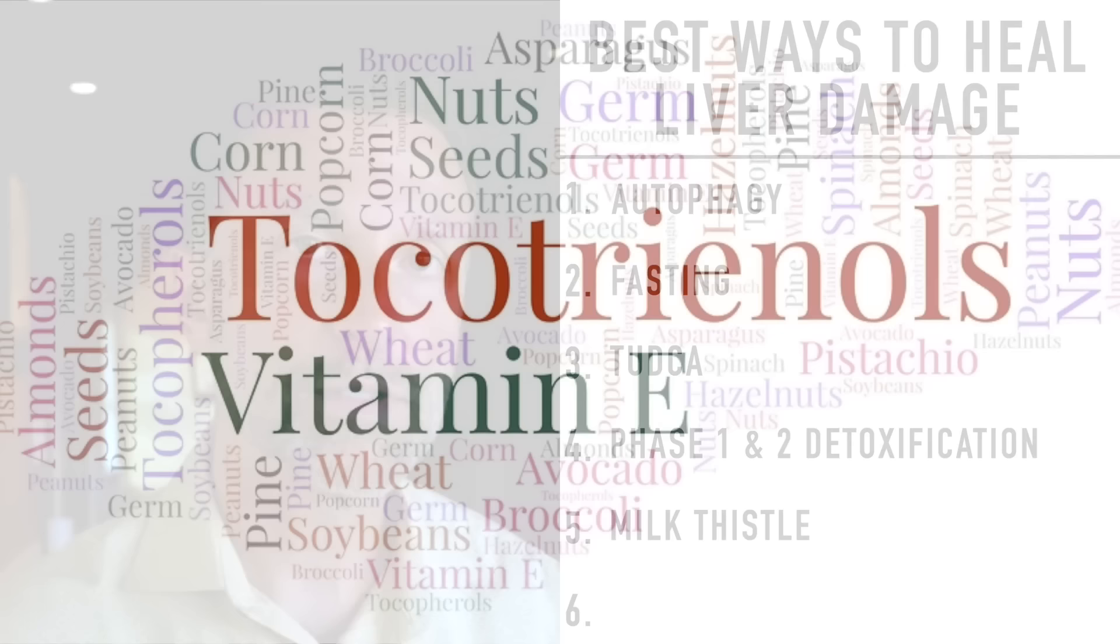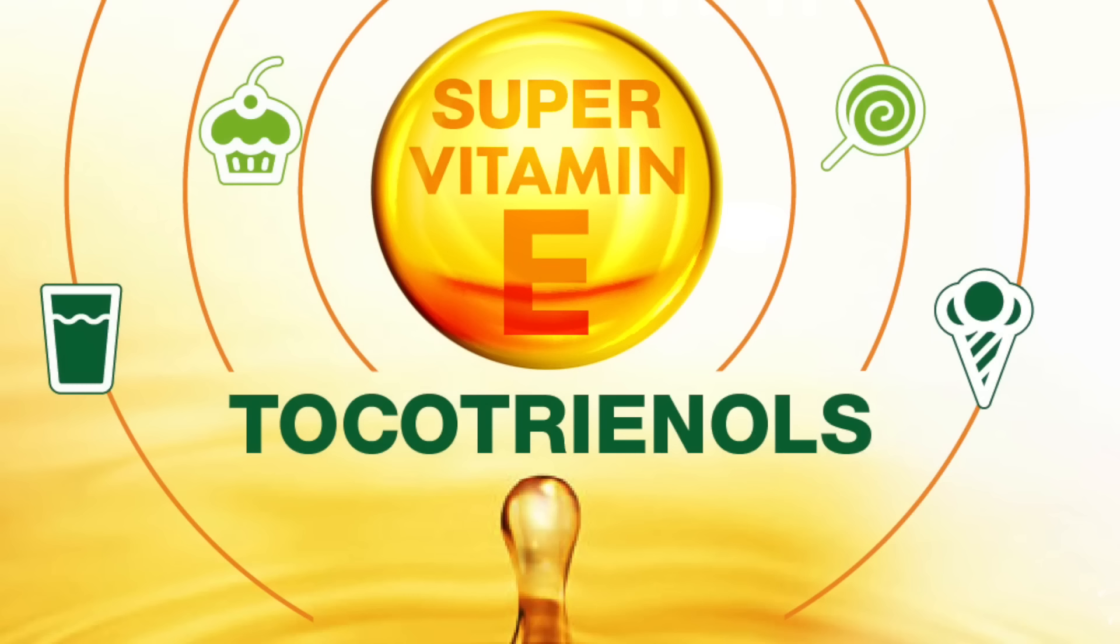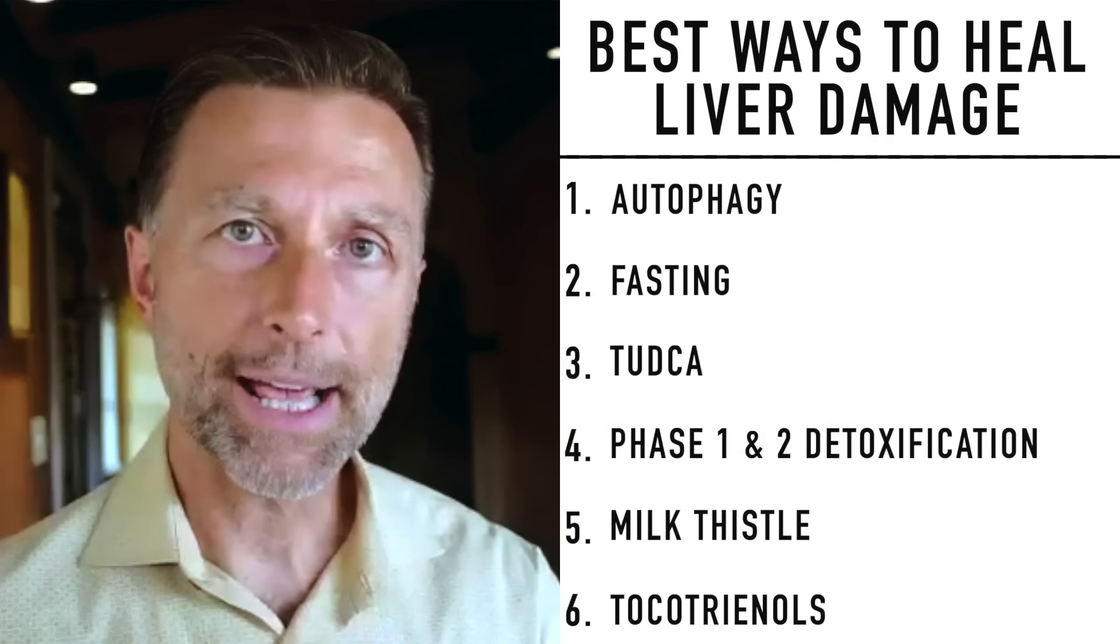And the last thing is tocotrienols. Now what is tocotrienols? It's a type of vitamin E. Anytime you have scar tissue or fibrosis, vitamin E, especially tocotrienols, is a great thing to help break up scar tissue. So that's why I included it on the list.